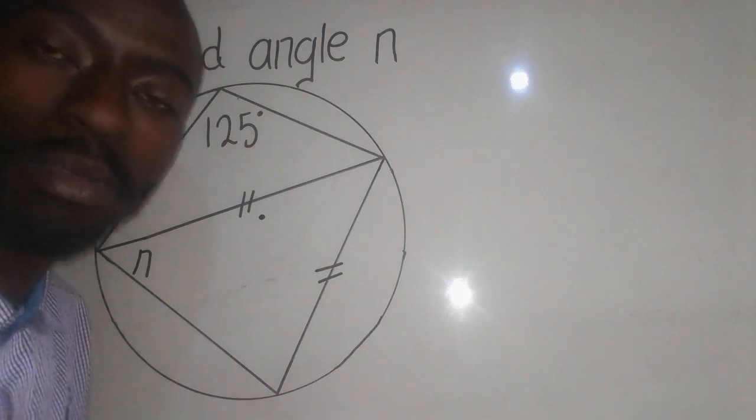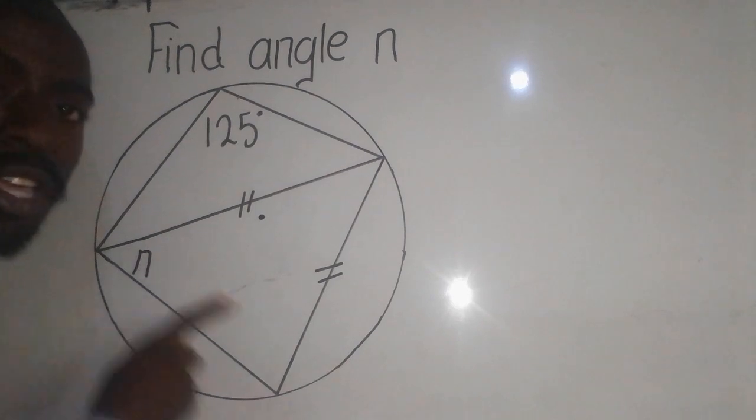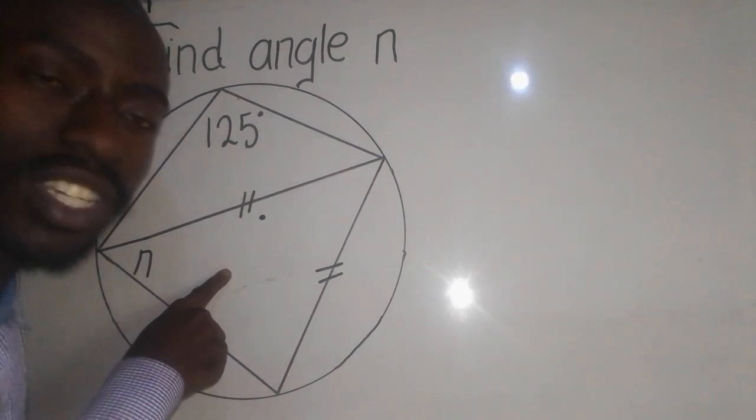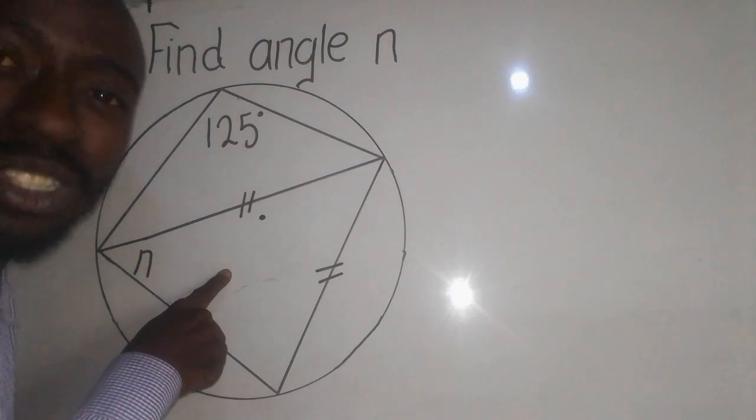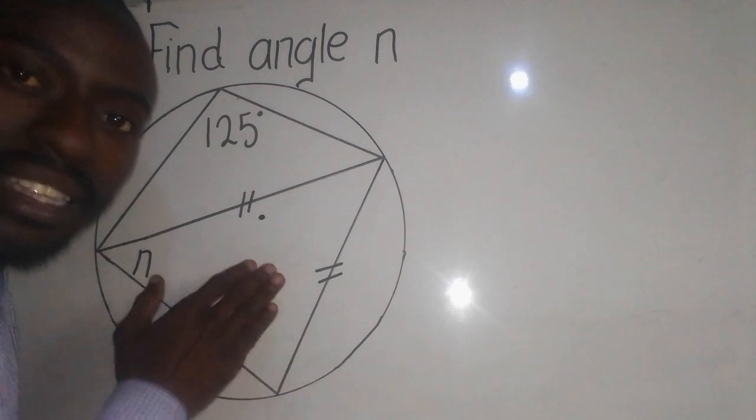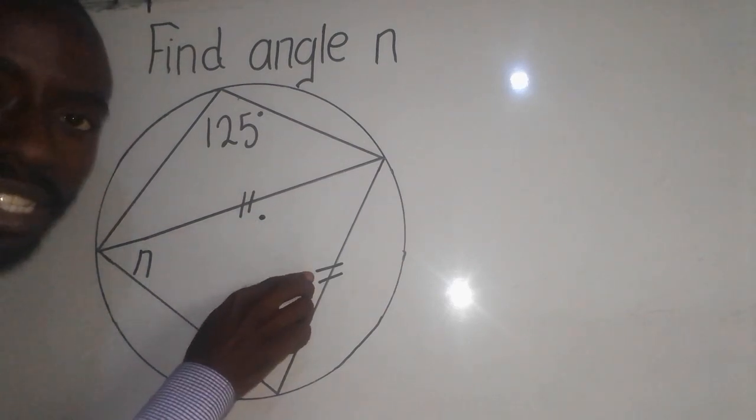Now, how can you find n here? You need to understand that we are given a special type of triangle which is called an isosceles triangle. How do I know that this is an isosceles triangle? Because of these two lines you are seeing here.